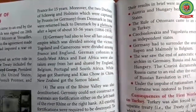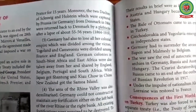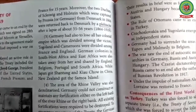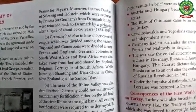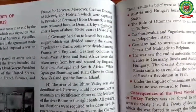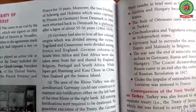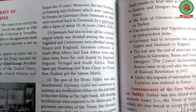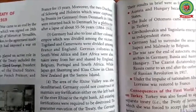Belgium received Eupen and Malmedy, and Denmark received Schleswig and Holstein. The rich coal mine area of Germany called Saar was ceded to France for 15 years, with the area to be governed by the League of Nations. Germany also lost all her colonial empire, which was divided among the victors.